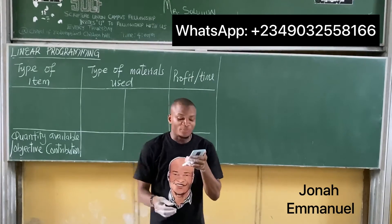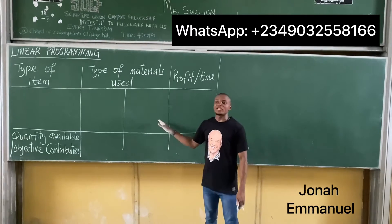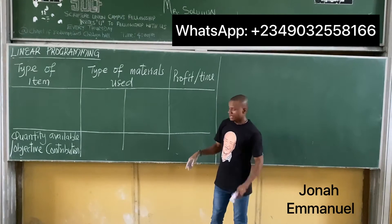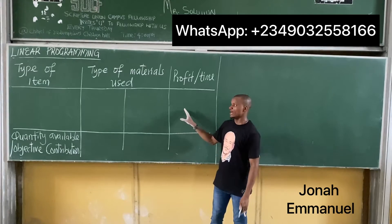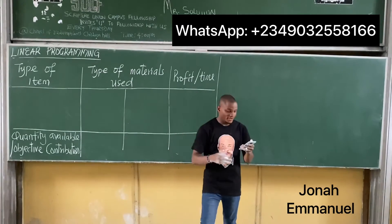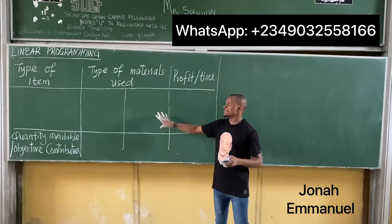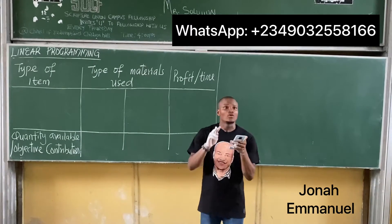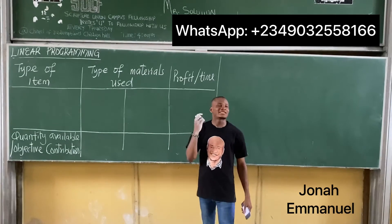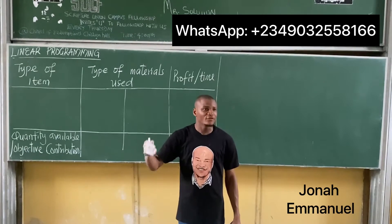It should be listed in the pattern below. Now, don't forget — in every question, focus on four things: type of item, type of material used, profit or time, then quantity available or objective contribution.